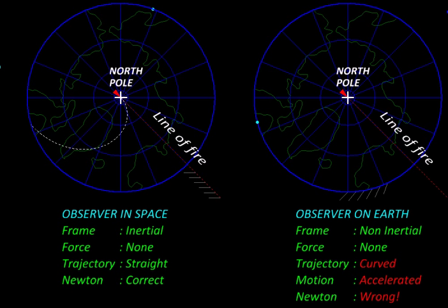Let us once again summarize what we observed. Now sitting on the Earth, we observed a shell taking a curved trajectory, but still there was no force acting on it. There was no observable force that actually deflected it.